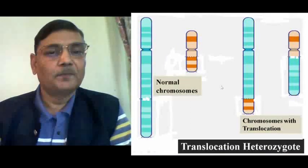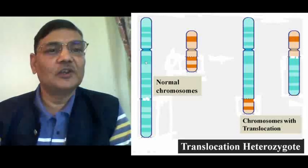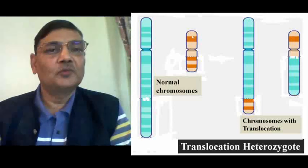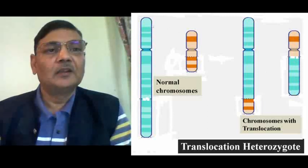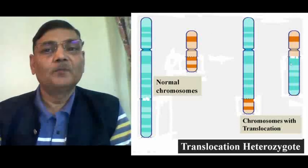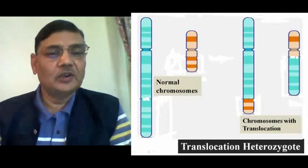There may be certain individuals who have a normal sequence of genes as well as translocated portions of chromosomes. In this diagram, we observe two non-homologous chromosomes — considered as 4 and 20 — that are normal chromosomes with completely normal gene arrangement. But the other two chromosomes of the same type carry translocated portions, with reciprocal translocations between them. An individual carrying all four of these chromosomes — two with normal arrangement and two with translocation — will be considered a translocation heterozygote.